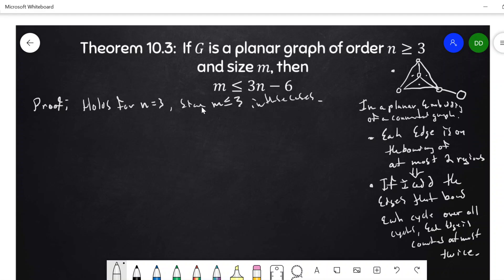Every graph of order 3 is planar. Next, so we can assume n is at least 4. We can also assume it's connected.